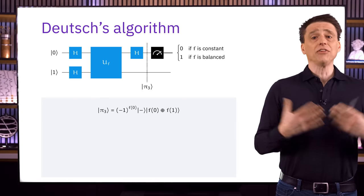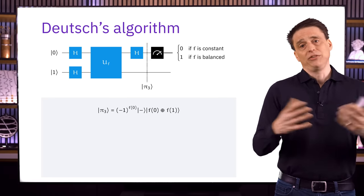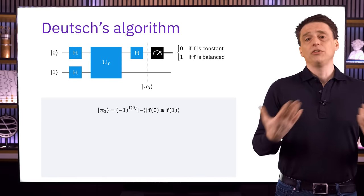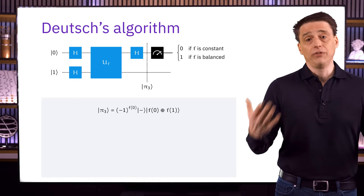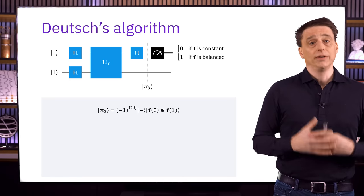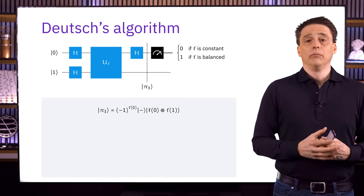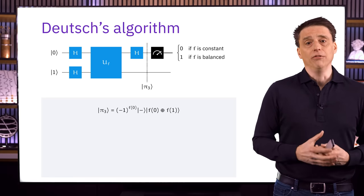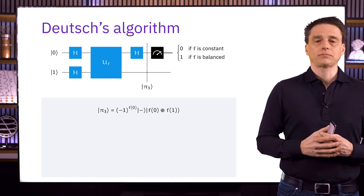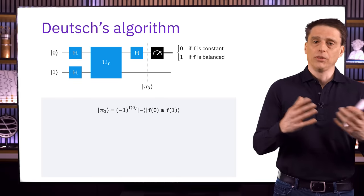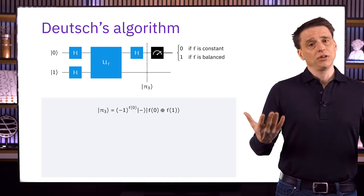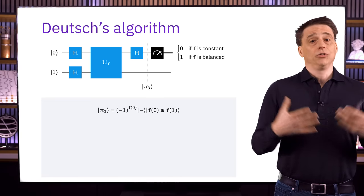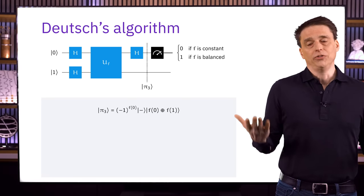If we ask ourselves what makes Deutsch's algorithm work — allowing us to compute the parity of two bits with a single query rather than two — a reasonable answer is interference. We're effectively computing f(0) and f(1) at the same time, because the Hadamard gate puts the input into a superposition of zero and one. By means of the phase kickback together with the final Hadamard gate, we're creating constructive interference for the correct answer and destructive interference for the wrong answer, so we only see the correct answer.